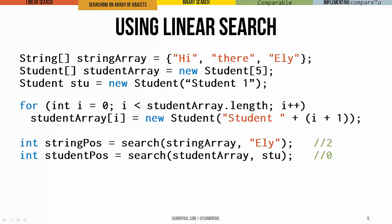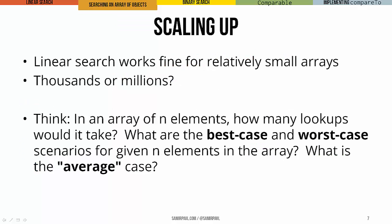So take a look at this. Here's a code segment that uses that search method to search arrays of two different types. You can see we have an array of strings called stringArray. You can see we have an array of students called studentArray. We make a target, and then we can go through.